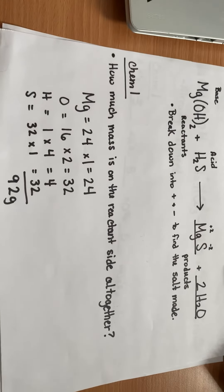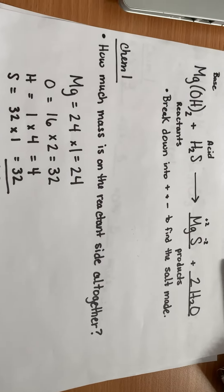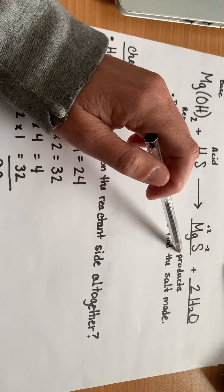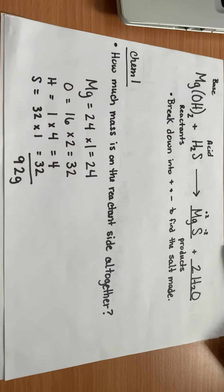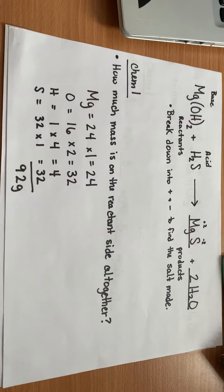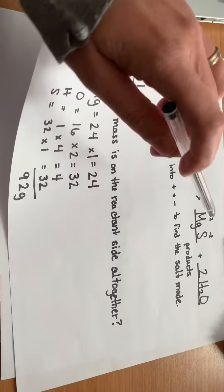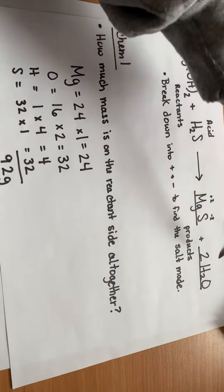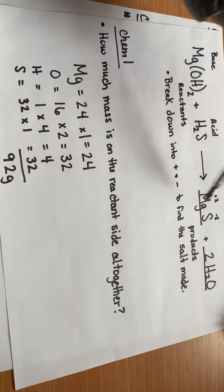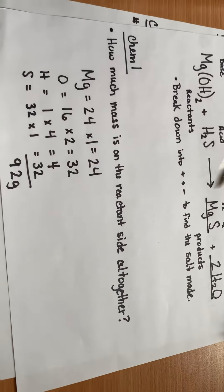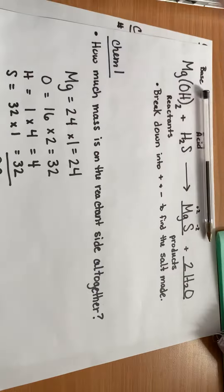Now, if I asked you guys to add up the product side right now, you would also get 92 grams, because once again, you cannot create or destroy matter. So things can change, and they have changed over here, but you still have the same number of elements. You still have the same mass as you did on the reactant side.